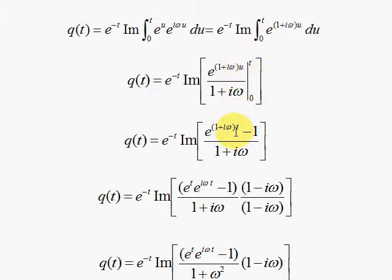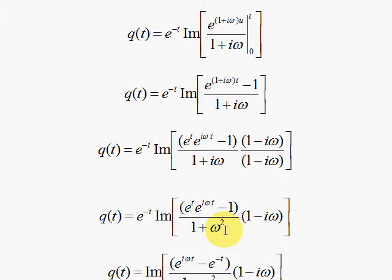At T, U is replaced by T, and at 0, U being replaced by 0 gives you simply a 1 over that denominator. So you have the exponent with the T minus the 1. I don't like this I hiding down here in the denominator, so I multiply top and bottom by the complex conjugate to free up the I down there, and that gives me 1 plus omega squared in the denominator, and the 1 minus I omega there.